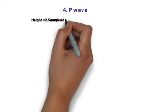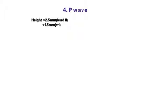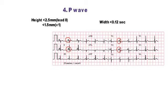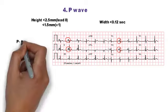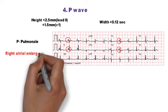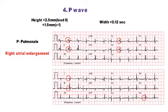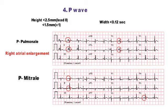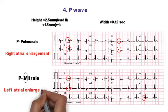Step 4 is P-wave. First check whether a P-wave is present, then assess its morphology using lead 2 and V1. Normal P-wave height is less than 2.5 mm in limb leads and less than 1.5 mm in precordial leads, with width less than 0.12 seconds. Tall, peaked P-waves are called P-pulmonale, seen in right atrial enlargement. Bifid or notched P-waves — M-shaped — are called P-mitrale, seen in left atrial enlargement.